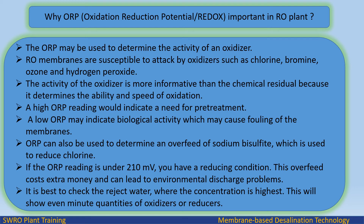A low ORP may indicate biological activity which may cause fouling of the membranes. ORP can also be used to determine an overfeed of sodium bisulfite, which is used to reduce chlorine. If the ORP reading is under 210 mV, you have a reducing condition. This overfeed costs extra money and can lead to environmental discharge problems. It is best to check the reject water where the concentration is highest, as this will show even minute quantities of oxidizers or reducers.